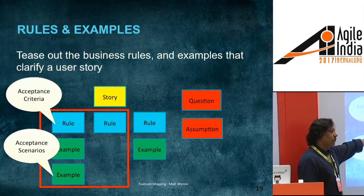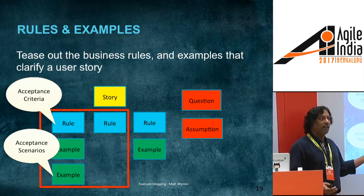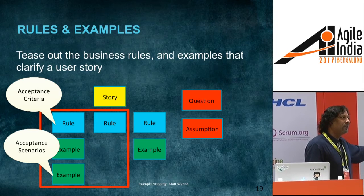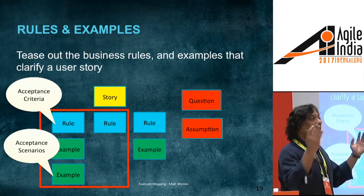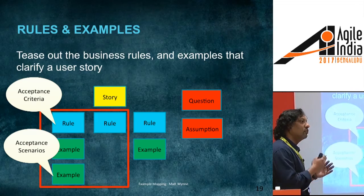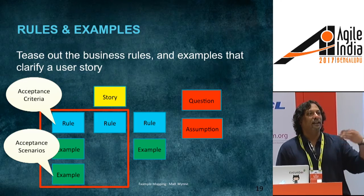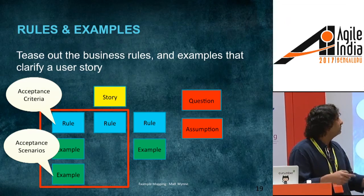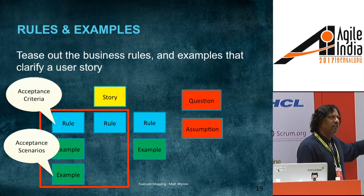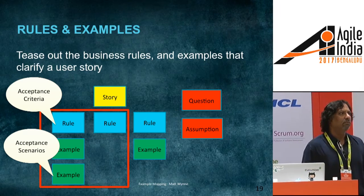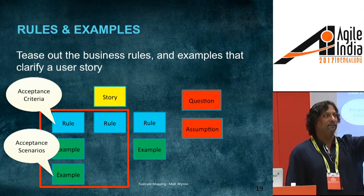These rules are nothing but your acceptance criteria. If you get testers engaged early enough, they give us illustrative examples that become your acceptance scenarios. Whether you express them as Given/When/Then and make them automated tests, it gives us a way to move towards getting stories to done, while also providing a mechanism to split them. How many of you use example mapping or a similar technique for gleaning acceptance criteria? A few — it's a lightweight and powerful way to do this.